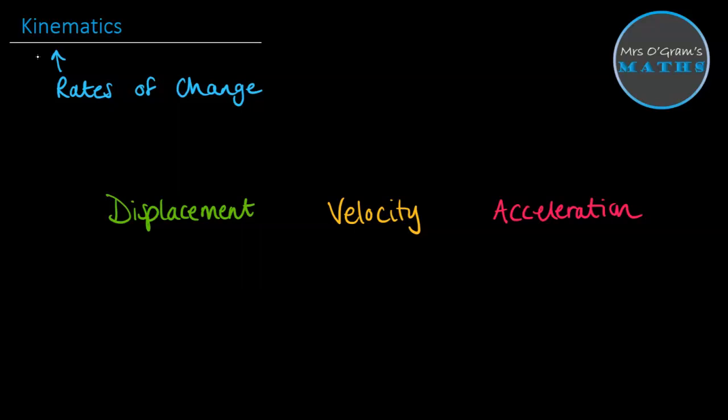Then we move to velocity, which could also be thought of as speed. So we're talking about how far something has been displaced over time. So that gives us the speed. The change in distance over the change in time gives us speed, and that sort of language should get you thinking about differentiation.